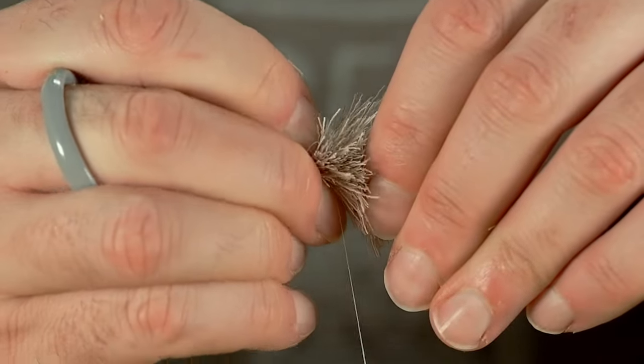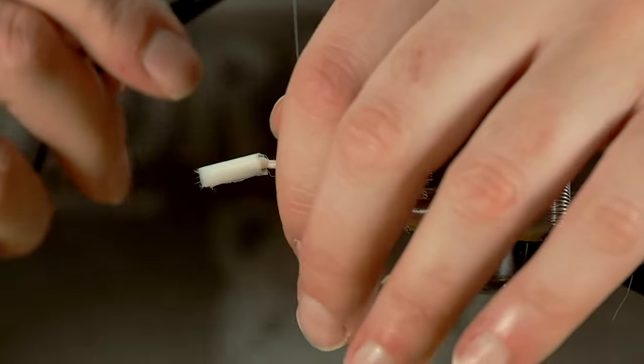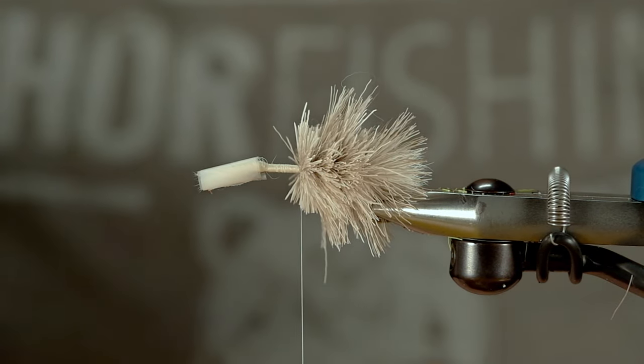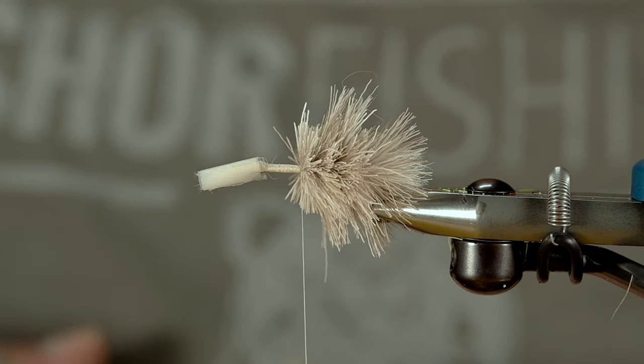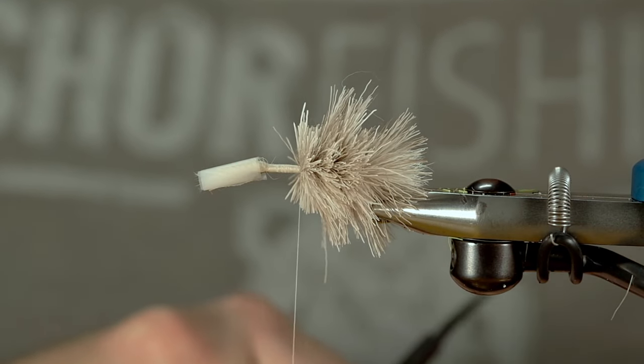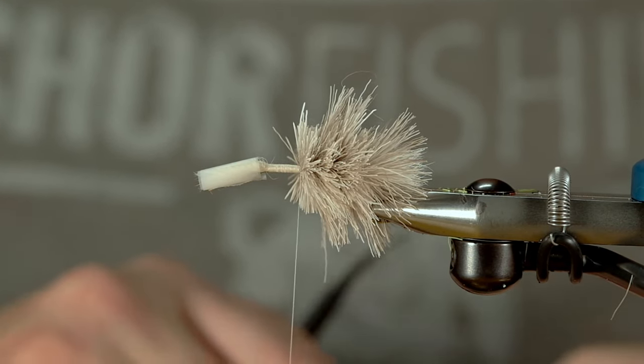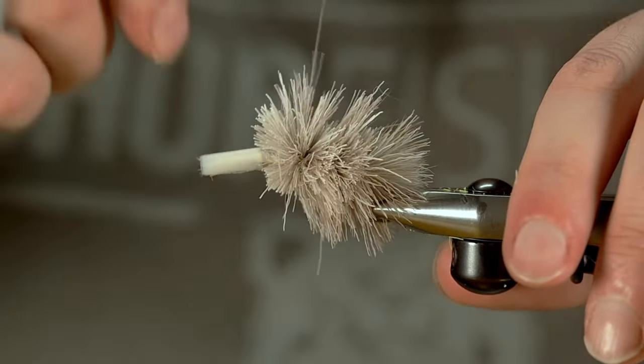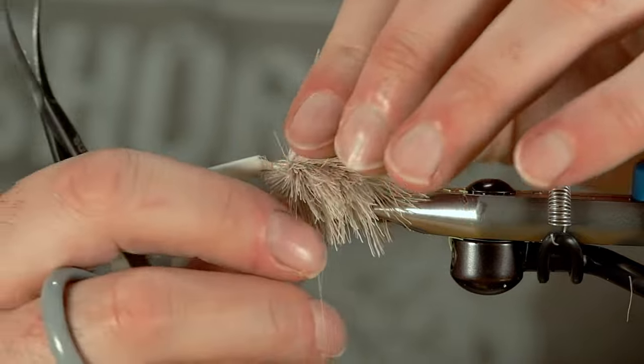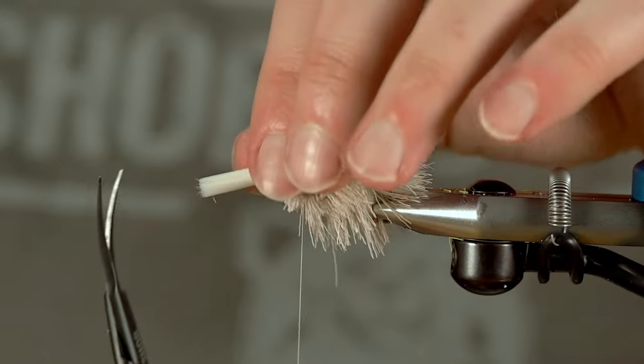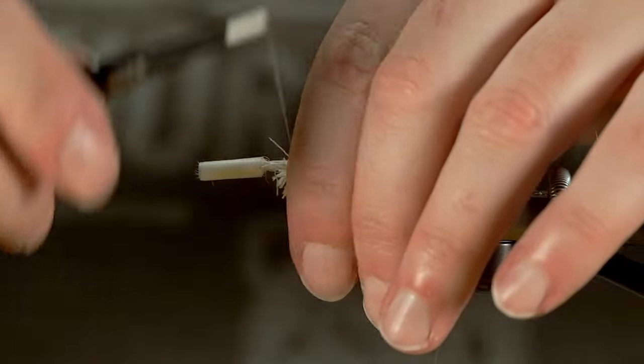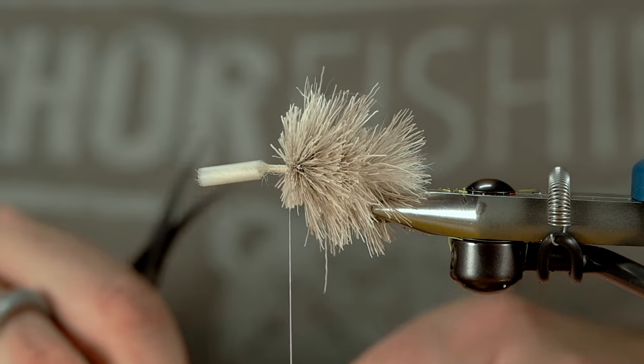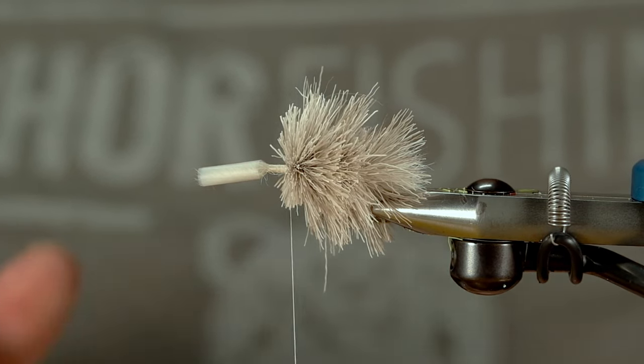I usually use whitetail deer. This was the first natural fur I saw when I opened up my container, so I just grabbed this. Caribou is noticeably softer than whitetail deer. It's nice stuff. I still kind of prefer, yeah, I do prefer whitetail. I don't know.